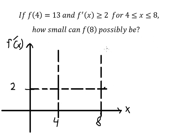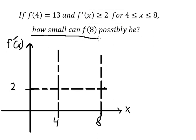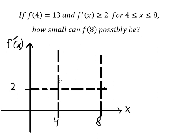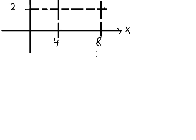For example, the graph can be like this, or maybe like this, or maybe like this — because the derivative is always greater than or equal to number two. So if we want to find how small f of number eight can be, we start from here, but we have f of number four in here. We know that the area under the function here lets us find the value of f of number eight.